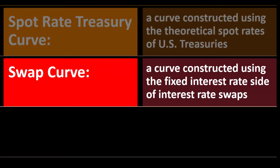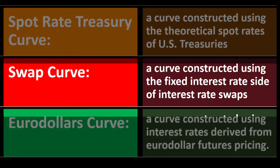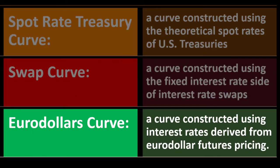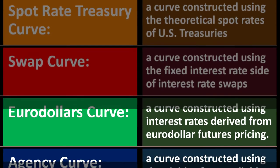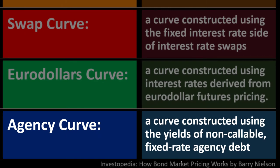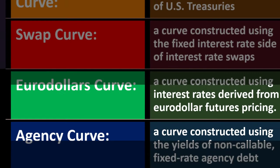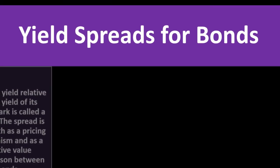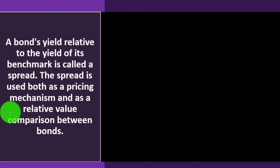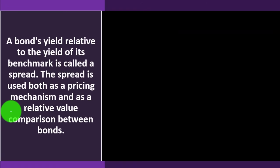Other popular bond benchmarking pricing curves include: the spot rate Treasury curve — constructed using the theoretical spot rates of U.S. Treasuries; the swap curve — constructed using the fixed interest rate side of interest rate swaps; the Eurodollar curve — constructed using interest rates derived from Eurodollar futures pricing; and the agency curve — constructed using the yields of non-callable, fixed-rate agency debt.